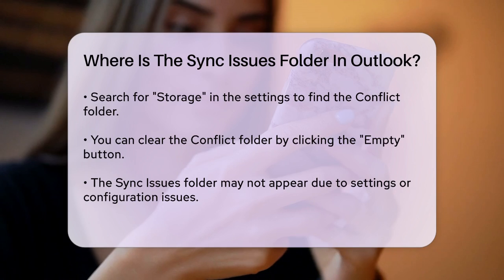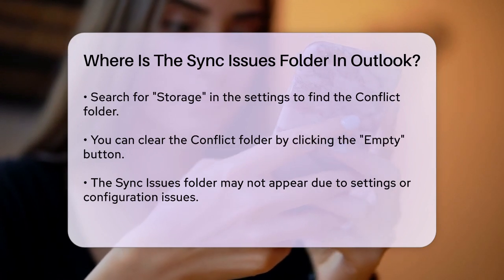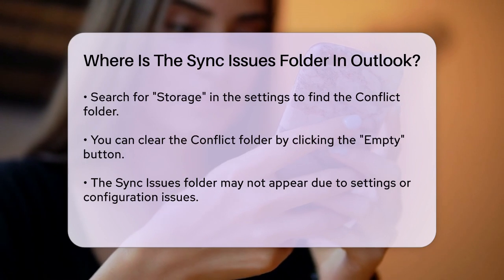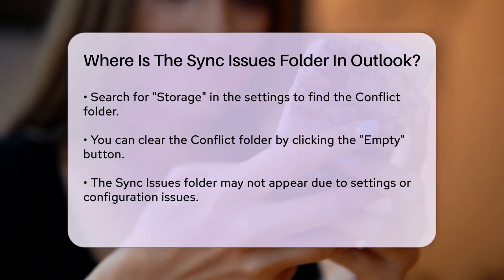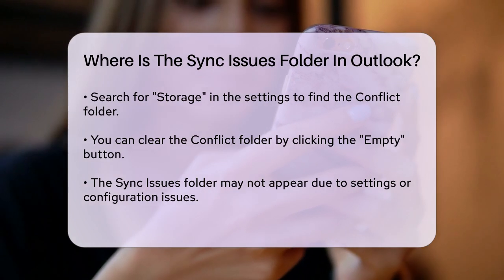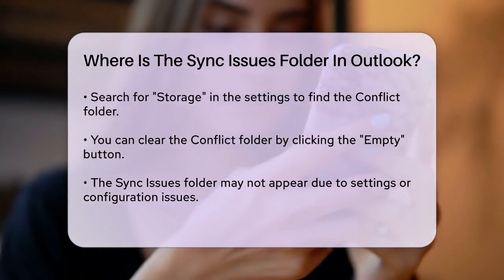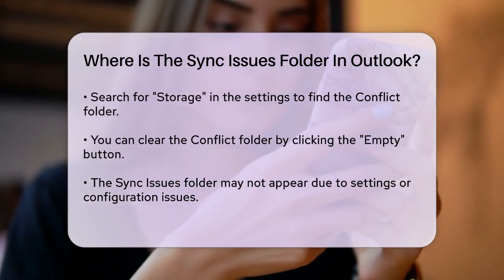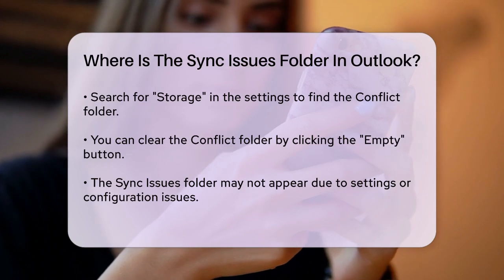It's also important to note that sometimes the Sync Issues folder might not be visible due to various reasons, such as settings or issues with your Outlook configuration. If Control-6 doesn't work, you might need to check your Outlook settings or ensure that hidden folders are made visible.